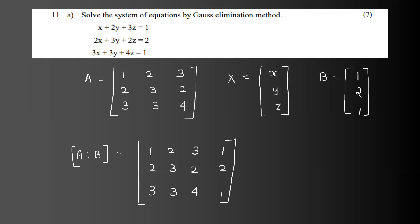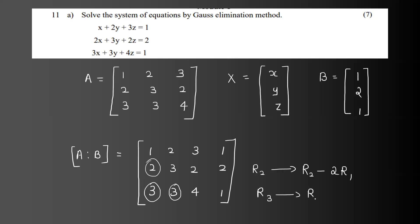This row is reduced by 2. We reduce through row transformation. The first element in the pivot row is 1, so we perform the operations. R2 changes to R2 minus 2·R1, and R3 changes to R3 minus 3·R2.